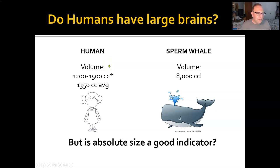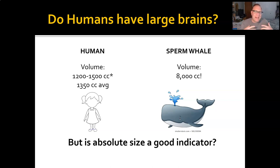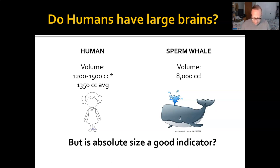We have big brains, but what's that even mean? Typical volume of the human brain is anywhere from 1,200 to 1,500 cc's — maybe a little more, up to 1,600 or 1,700. The average is about 1,350. However, if you look at a sperm whale, its brain is 8,000 cc's — significantly larger than our brain. So we don't have a larger brain than a sperm whale, and yet we do all these things we think of as intelligent that sperm whales don't. If brains have something to do with behavior, what is the difference between these brains that produces these different behaviors?